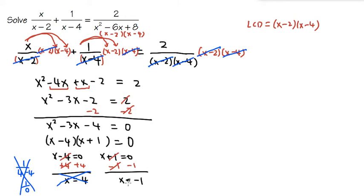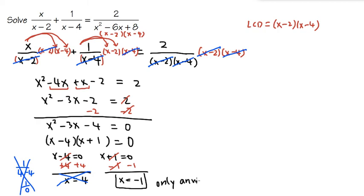Now let's check x equals negative 1. We just need to check if the value makes any denominator equal to 0. If we plug in negative 1: negative 1 minus 2 is negative 3 — that's not 0, so that's good. Negative 1 minus 4 is negative 5 — that's not 0 either. Plugging negative 1 into the third denominator also doesn't give 0. So the answer to this question is x equals negative 1 only. That is the only answer.